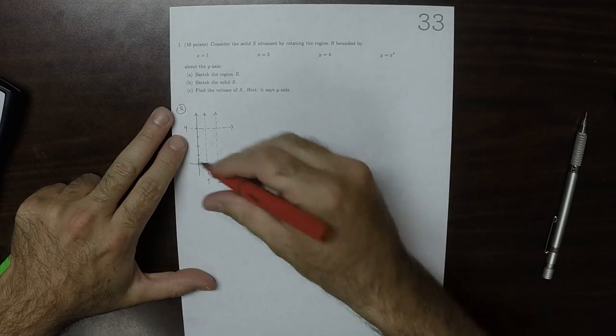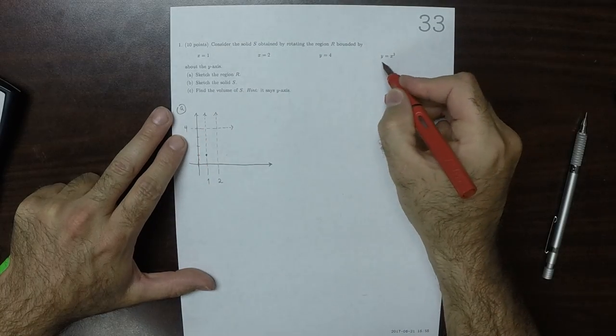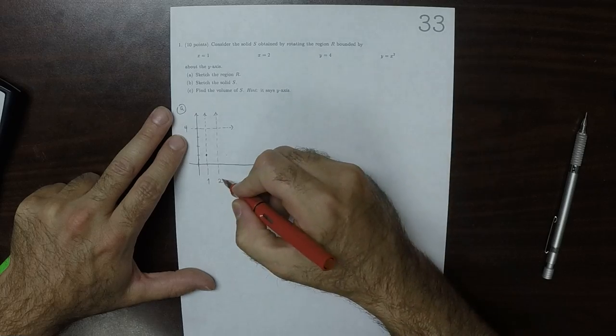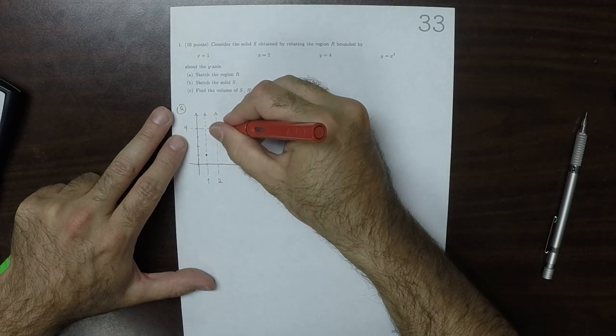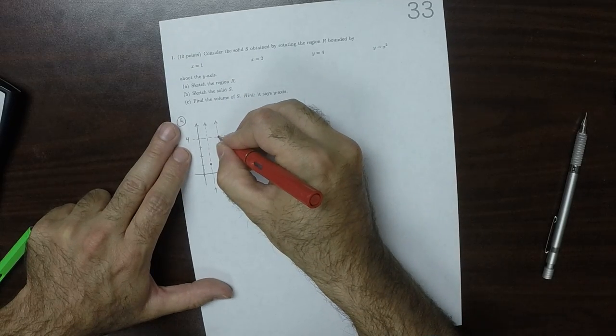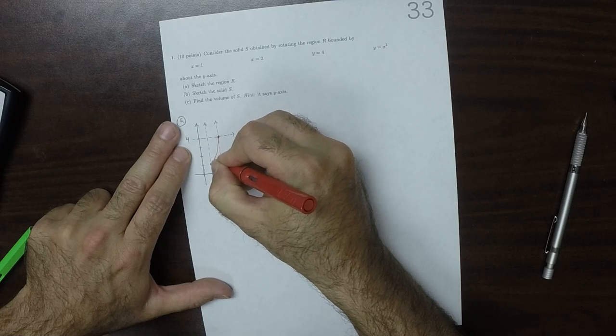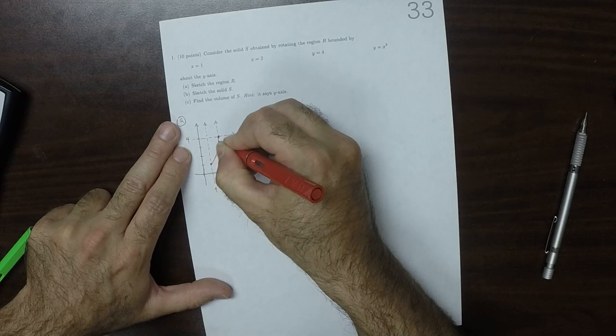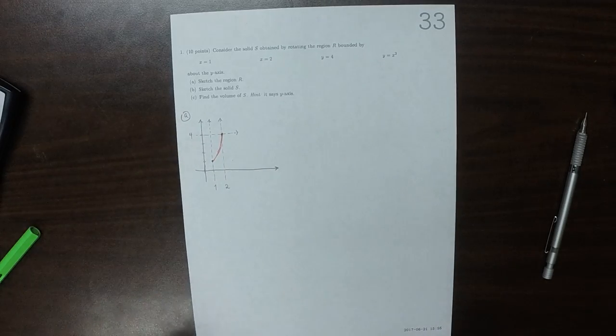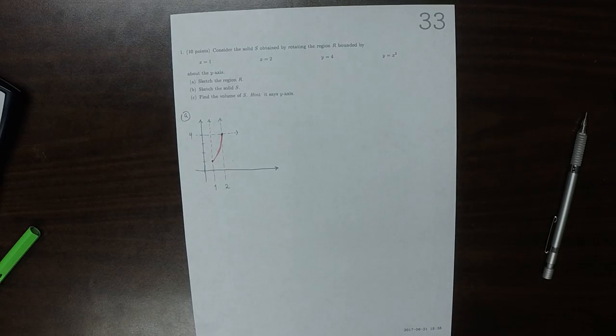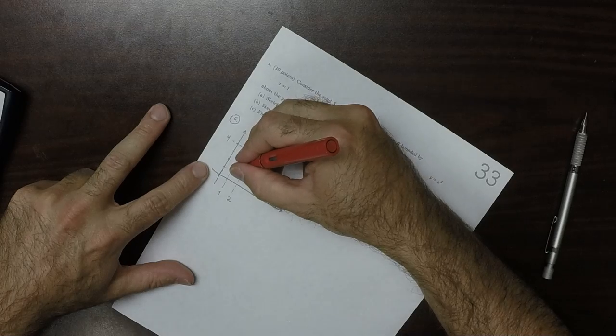So when X is 1, Y is 1. And when X is 2, Y is 4. Okay, so then, the only region bounded by those pieces is this region.